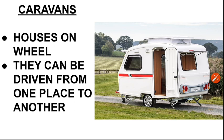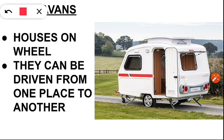The last type of house is a caravan. These houses are called houses on wheels, as they can be driven or moved from one place to another.